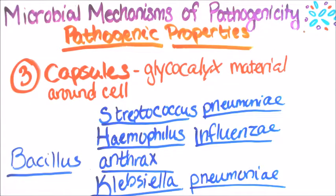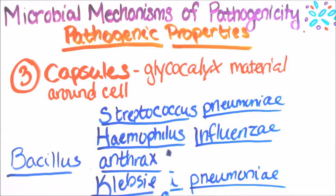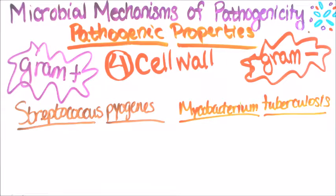Number three are capsules. Capsules are glycolic material around the cell. The bacteria that have capsules are Streptococcus pneumoniae, Haemophilus influenzae, Bacillus anthracis, and Klebsiella pneumoniae.